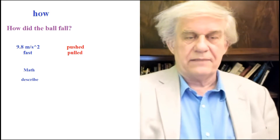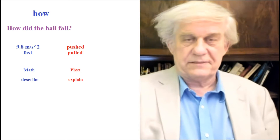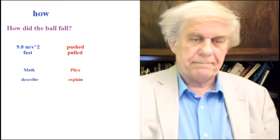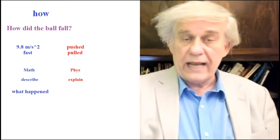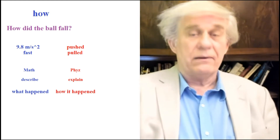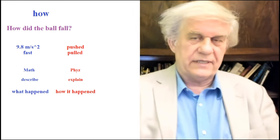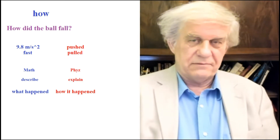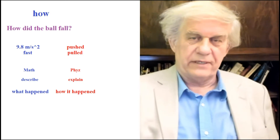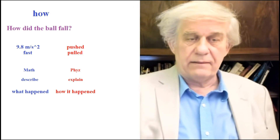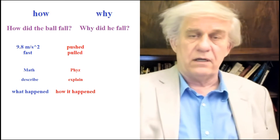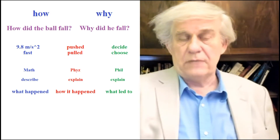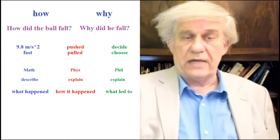The first answer is math — just a description: 9.8 meters per second squared. The second is physics — we're looking for an explanation. Description is not the same thing as an explanation. The first deals with what happened; the second deals with how it happened. These are different types of replies to the same word 'how.' Then there's the 'why,' and we end up with the same type of problem.